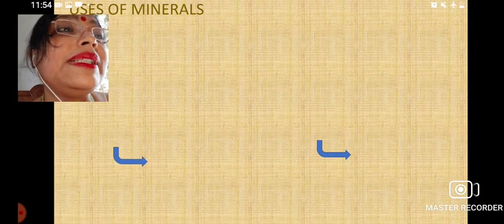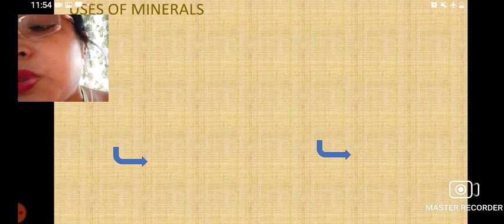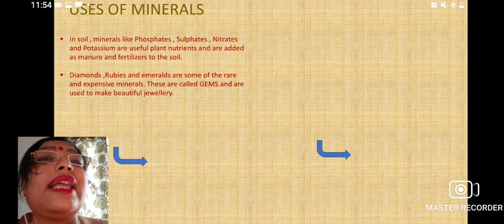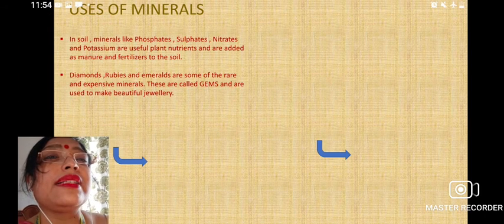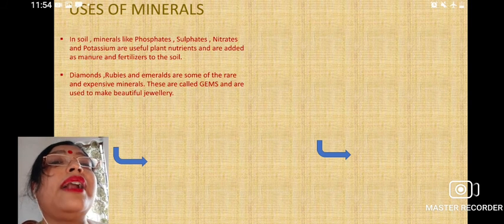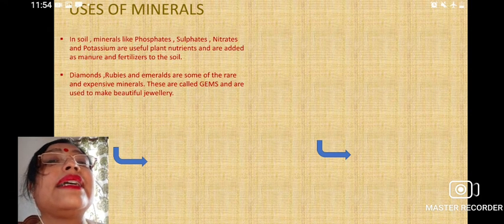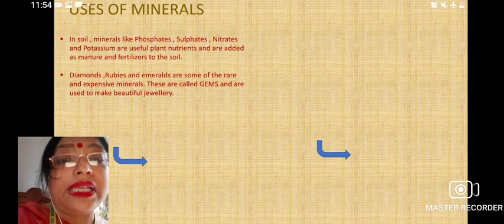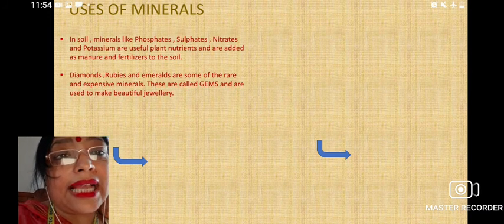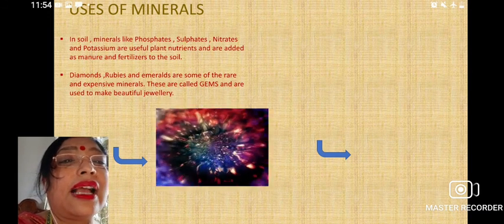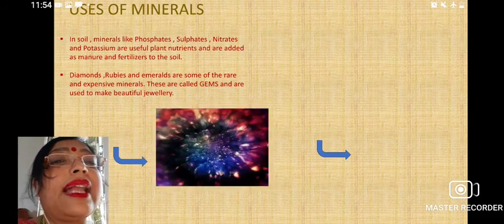Now we are coming to the uses of minerals. In soil, minerals like phosphate, sulfur, nitrate, and potassium are useful plant nutrients and are added as manure and fertilizer. These minerals are useful for the plants.